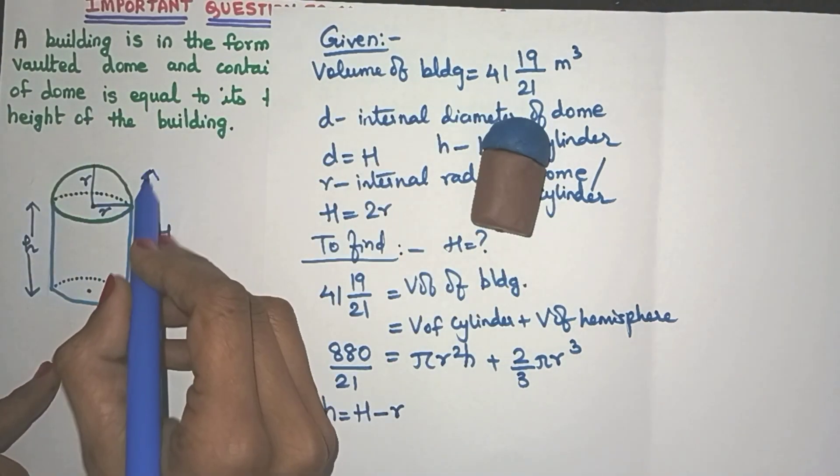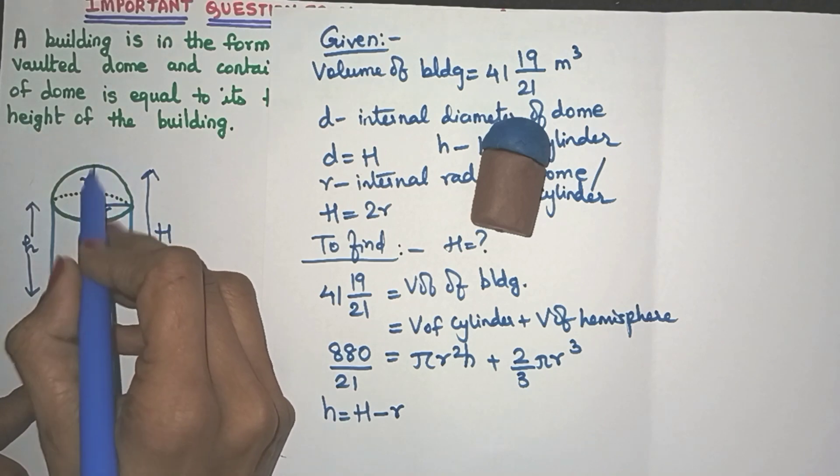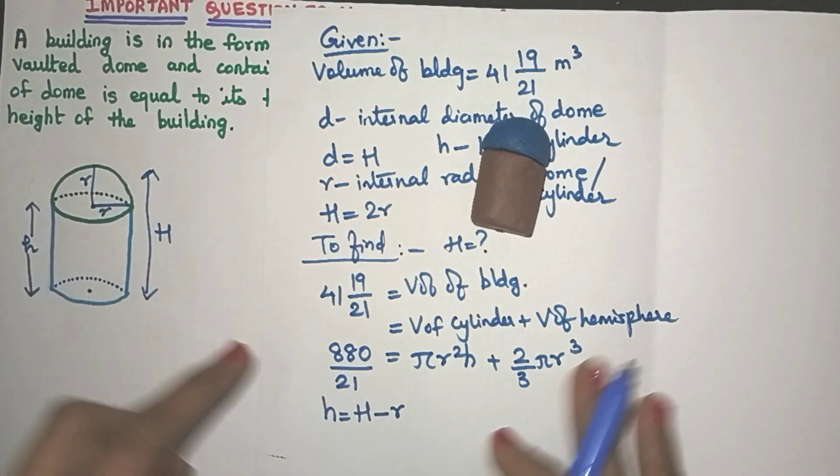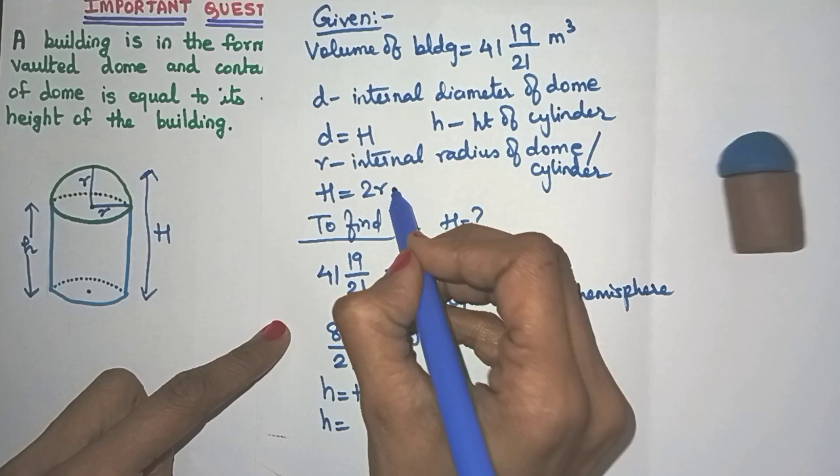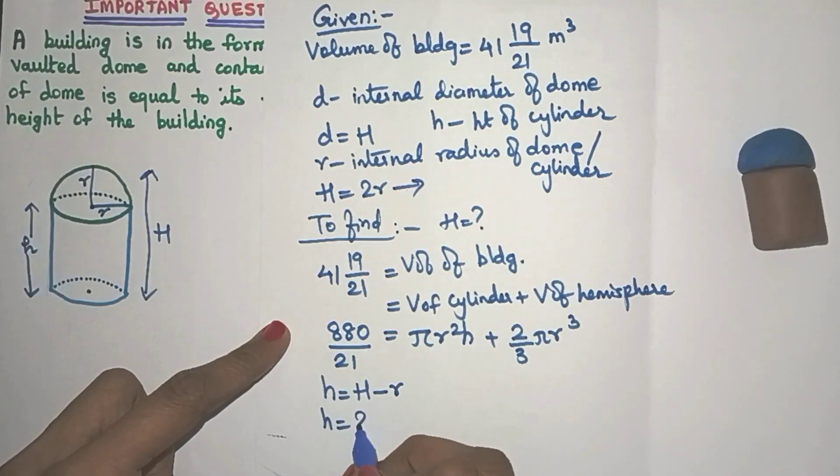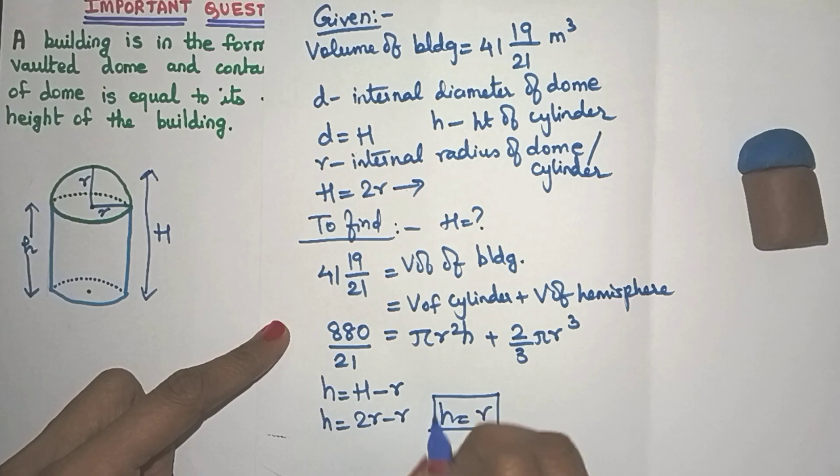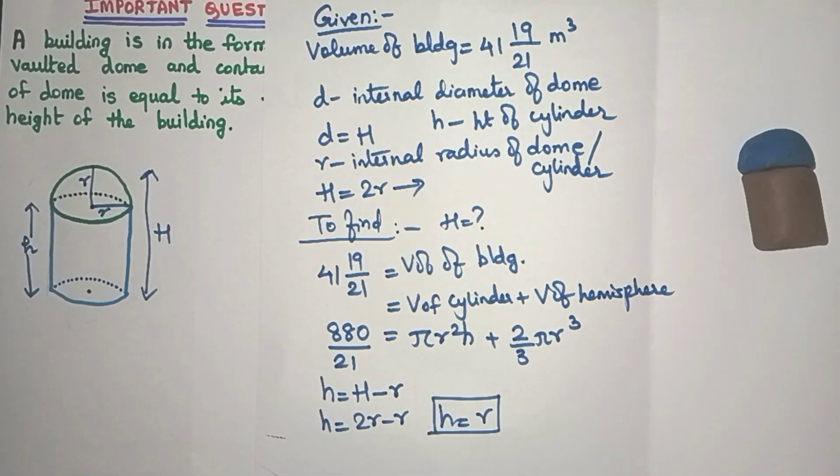Just have a look. If I take H and just take away the small R, I will get my small H, right? But what is H? Yes, it is nothing but 2R. So I can say 2R minus R, which means the height of the cylinder is equal to its own radius. That's great.